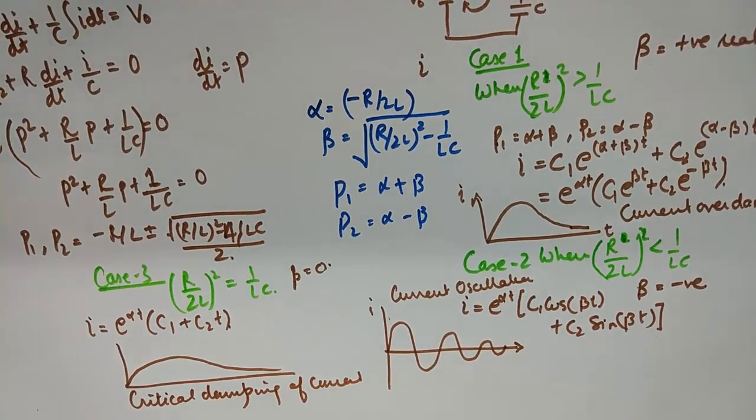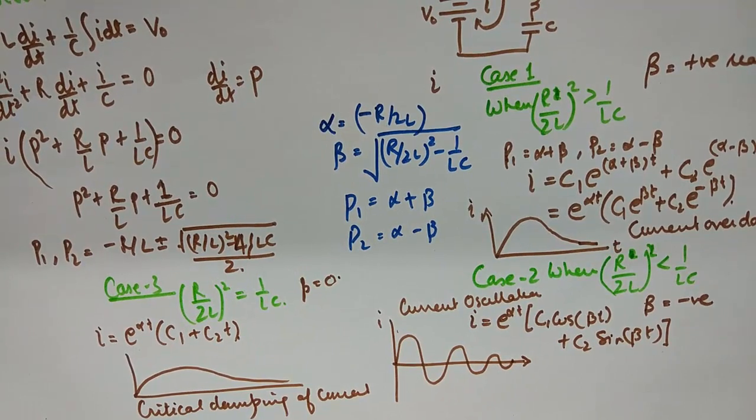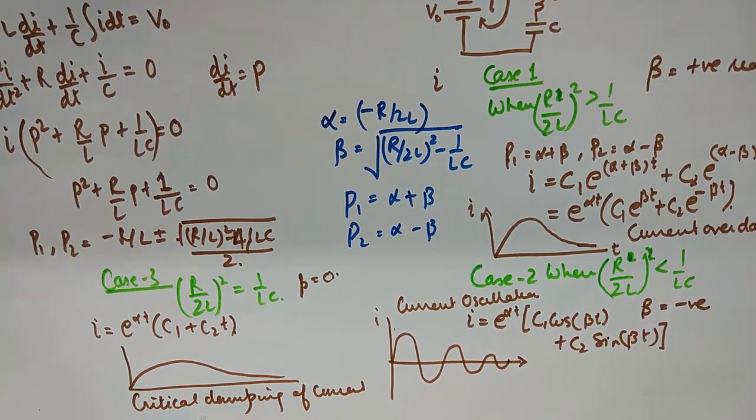But in any which way we will get one out of these three scenarios. And just by looking at the values of R, L and C we'll categorize the circuit into one of these categories. And we can predict the nature of the current with respect to time in that circuit by analyzing whether that circuit falls into case 1, case 2 or case 3. So that is how you analyze the transient response in RLC circuit with DC excitation.